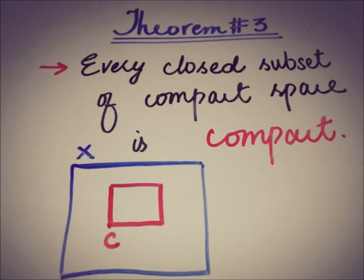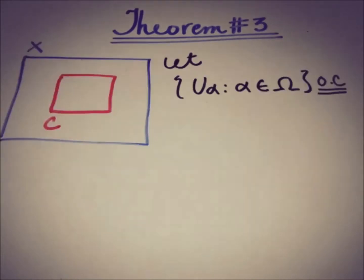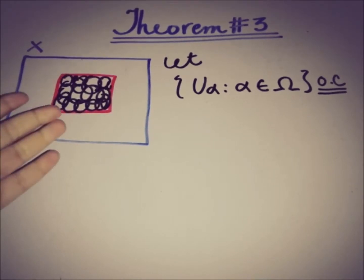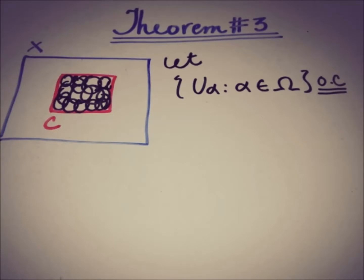We will start our proof from this: we are in search of a finite subcover of a closed subset of a compact space X. Let U_alpha be an open cover of C that covers the whole of C. So all of the U_alpha covers C and we have to figure out a finite subcover for that closed subset C.